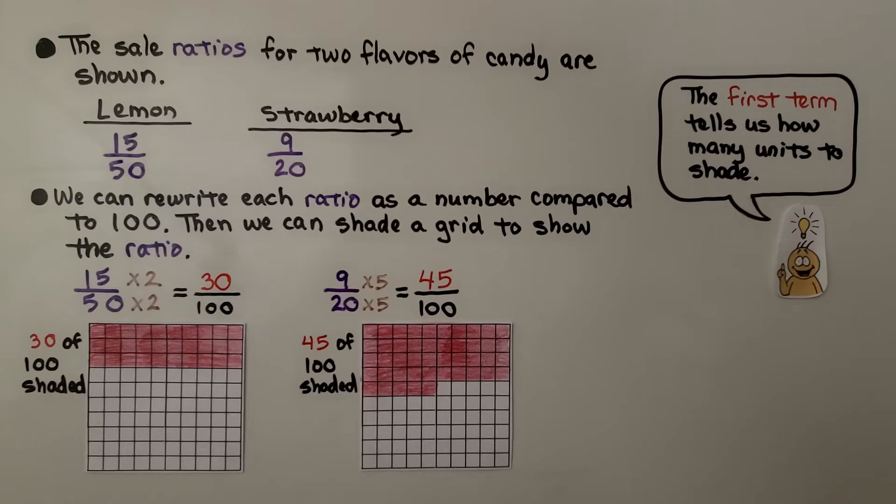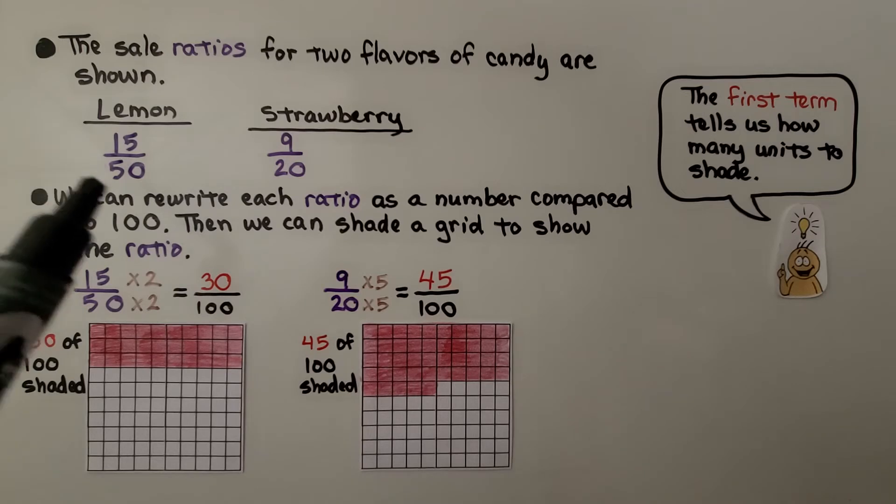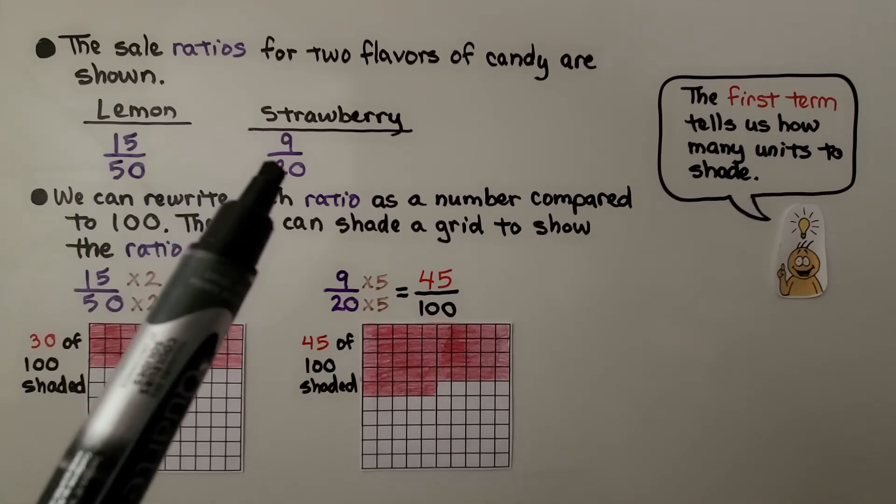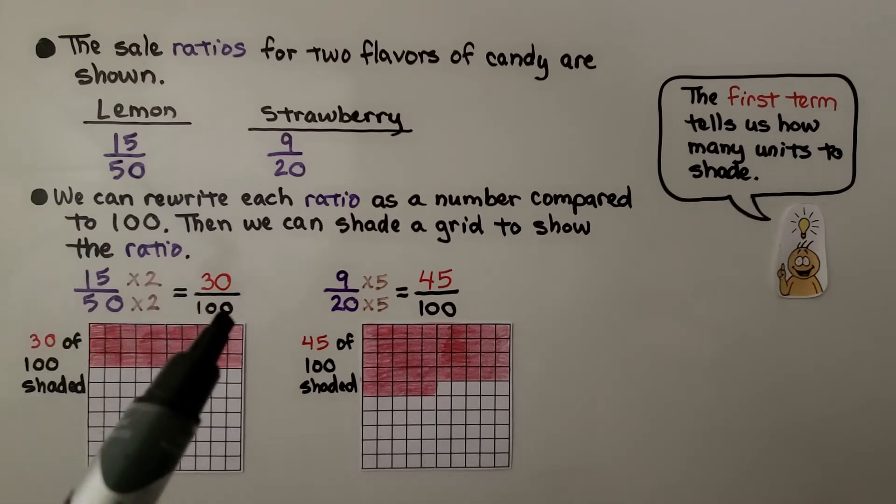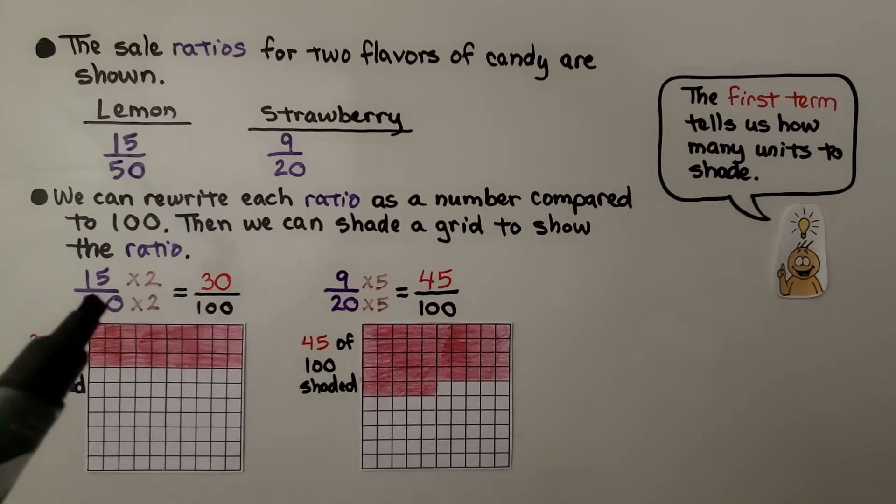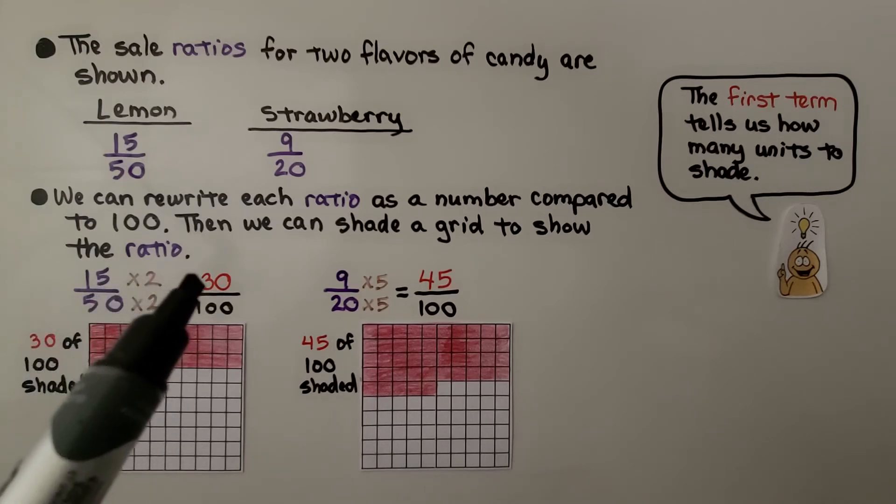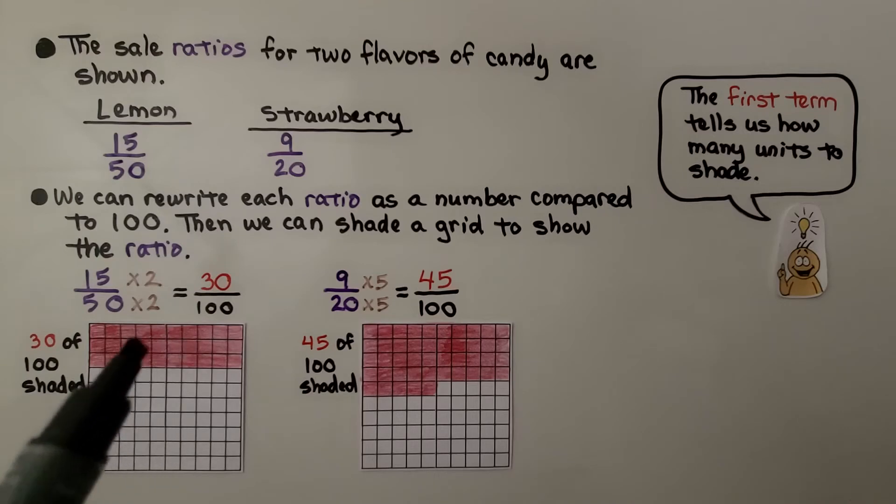The sale ratios for two flavors of candy are shown. The ratio for lemon is 15 to 50. And for strawberry, it's 9 to 20. We can rewrite each ratio as a number compared to 100. Then we can shade a grid to show the ratio. We have 15 to 50. We need to give it 100 as its second term, the denominator. We multiply that by 2. That means we need to multiply 15 times 2, which gives us 30. So we're going to shade in 30 of the 100 units.